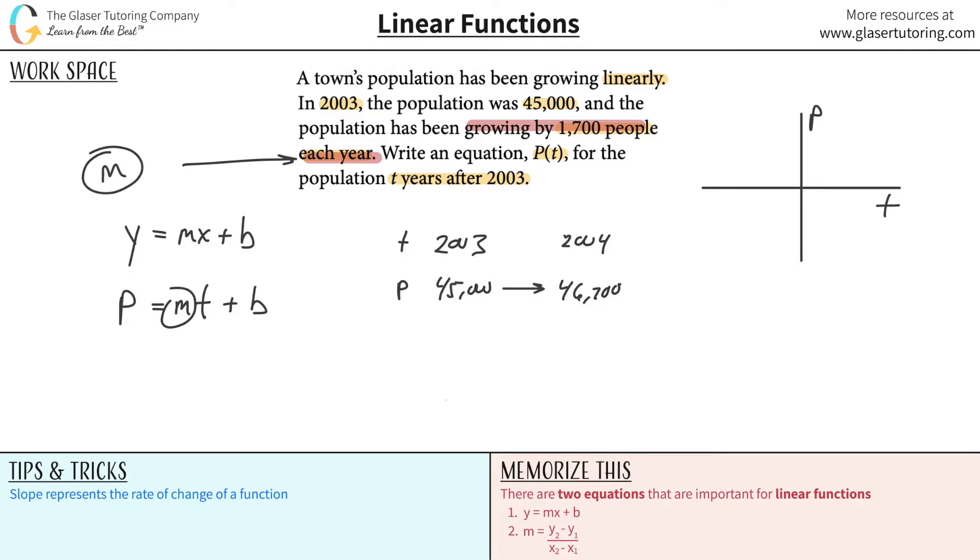Now I know what m is. I can now write that the population will be equal to 1,700 times the time in years plus b. What does time represent? Would I plug in 2003 or would I plug in one? The time here should be in terms of years after 2003. If it were 2004 you plug in one, if it were 2005 you'd plug in two, etc.